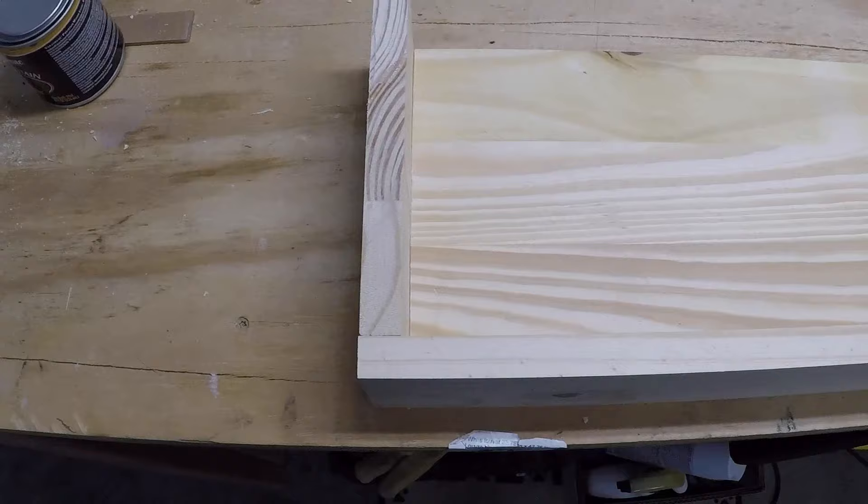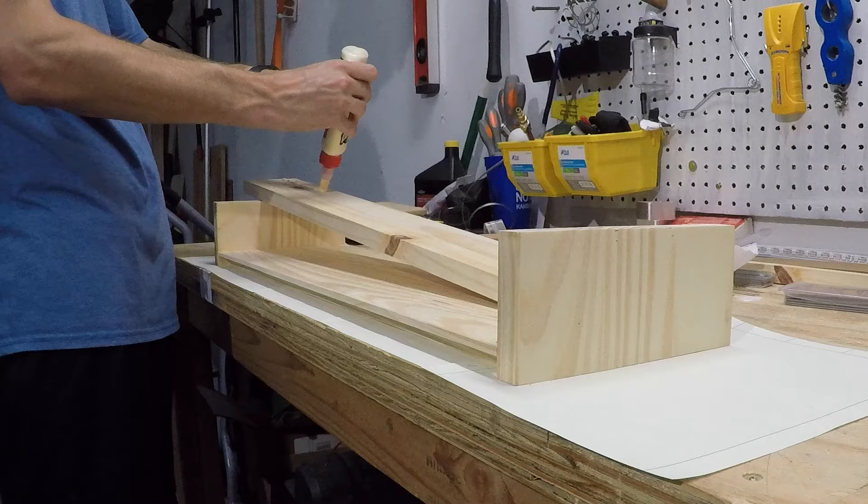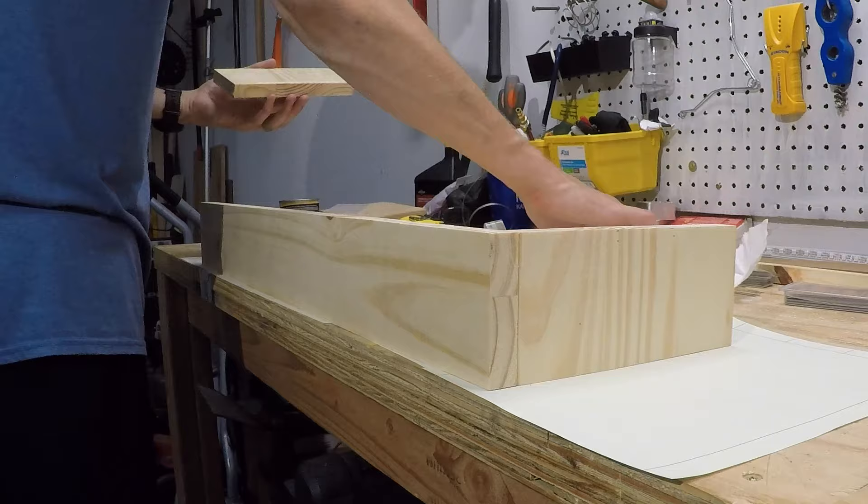While that's drying I'll set up the bottom, sides, and front for assembly. You can see I have a hole for the bottom LED cable to come to the interior of the shelf where the Arduino will be. Then I'll go ahead and glue and nail those pieces together.